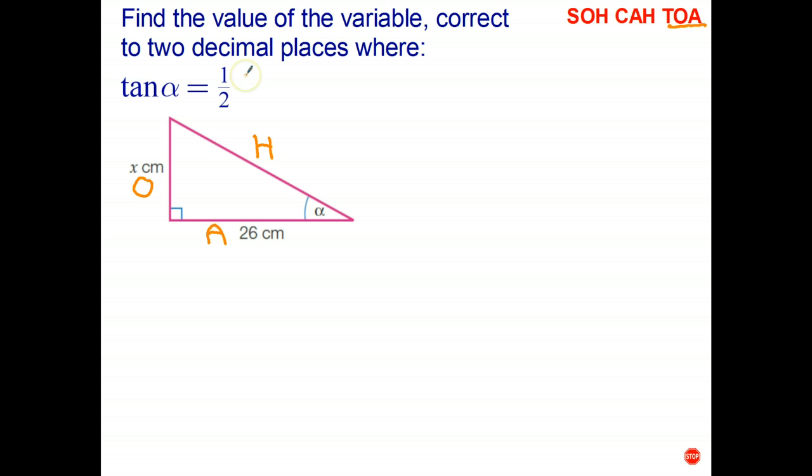So we know the tangent of the angle is one-half, so tan of alpha, in this case, is one over two. Now, the tangent ratio is just the opposite side over the adjacent side, so I'll write that in there. And the opposite side, we don't know what's X, the adjacent side is 26, so X over 26 equals one-half.